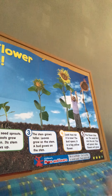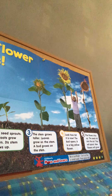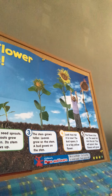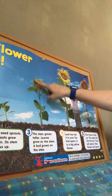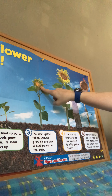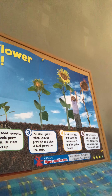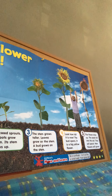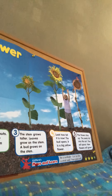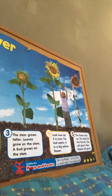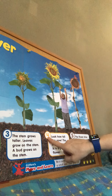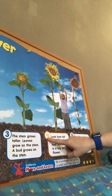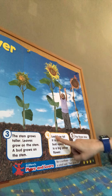The bud grows on the stem — there's the bud right there, it's not open yet, that's when we call it a bud. If you walk around and you see little buds on the trees, that means all the leaves will be growing. Next is our number four, and it's yellow.